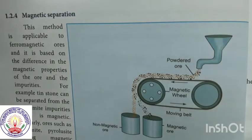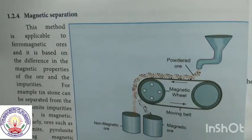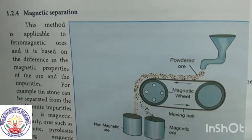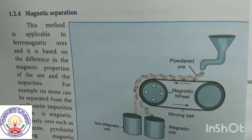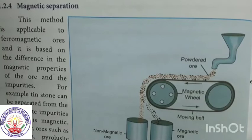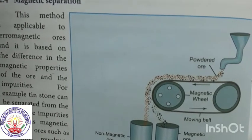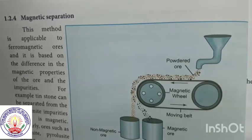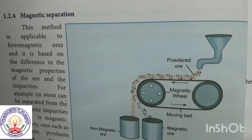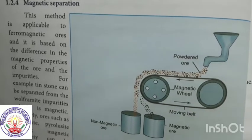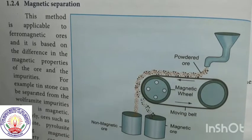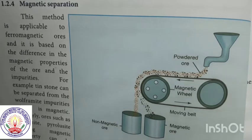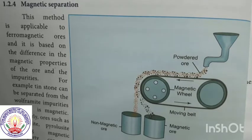The last method for the concentration of ore is magnetic separation. This is suitable for ferromagnetic ores and is based on differences in magnetic properties. Non-magnetic tinstone can be separated from wolframite; similarly, magnetic ores such as chromite and brucite can be removed from siliceous impurities.